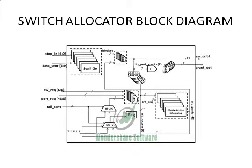The switch allocator block diagram contains two components: STALLO flow control module and Matrix Arbiter scheduling. The STALLO flow control module uses two signals — stop-in and data-sent. The stop-in signal is sent to the downstream node indicating that the buffer is almost full and only one slot is available to host the last flit. The data-sent signal is issued when the flit is transmitted, informing that one slot in the buffer is released. The Matrix Arbiter scheduling accepts all requests from the different input ports, verifies scheduling metrics, compares the priorities of different requests, and grants access to the one possessing the highest priority in the matrix.